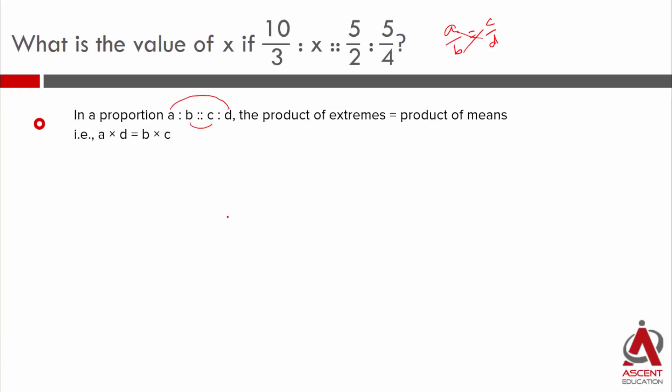Now, the given ratio is of this form: 10 by 3 is to x is the same as 5 by 2 is to 5 by 4. This becomes our a, this becomes our b, this is c and this is d. So, a into d will equal b into c.